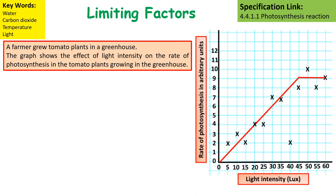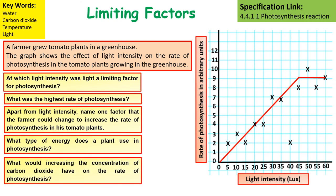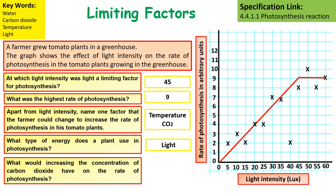A farmer grew potato and tomato plants in a greenhouse. The graph shows the effect of light intensity on photosynthesis. At a light intensity of 45 lux, there was a limiting factor for photosynthesis. The highest rate of photosynthesis was nine, which is the point at which the graph levels off. Apart from light intensity, other limiting factors the farmer could change to increase the rate of photosynthesis include temperature or carbon dioxide concentration. Plants need light energy for photosynthesis.